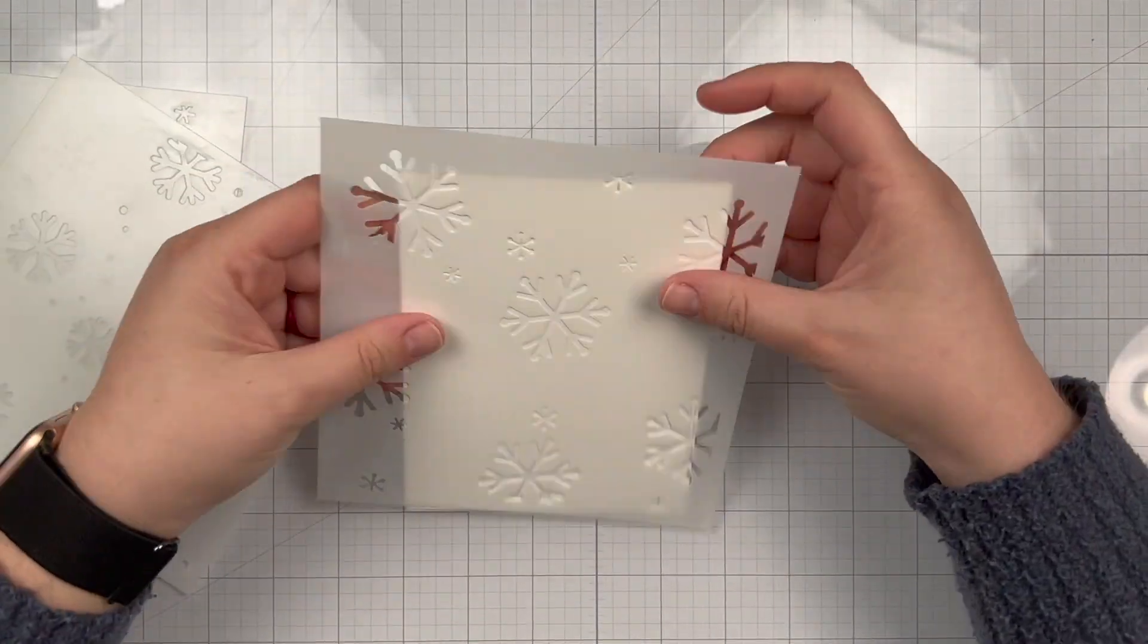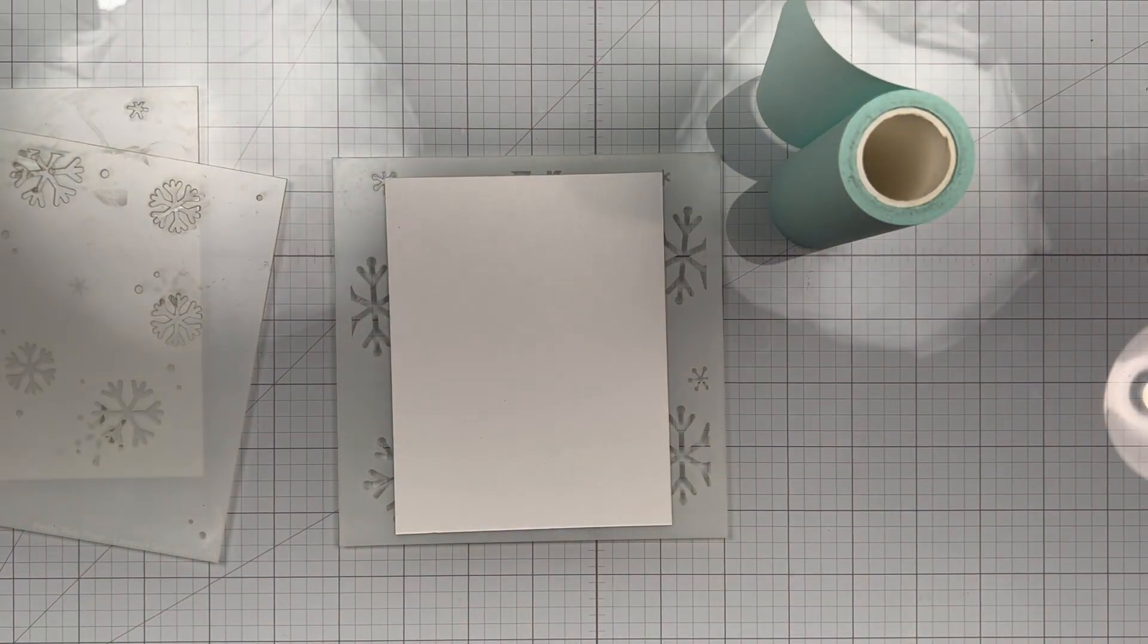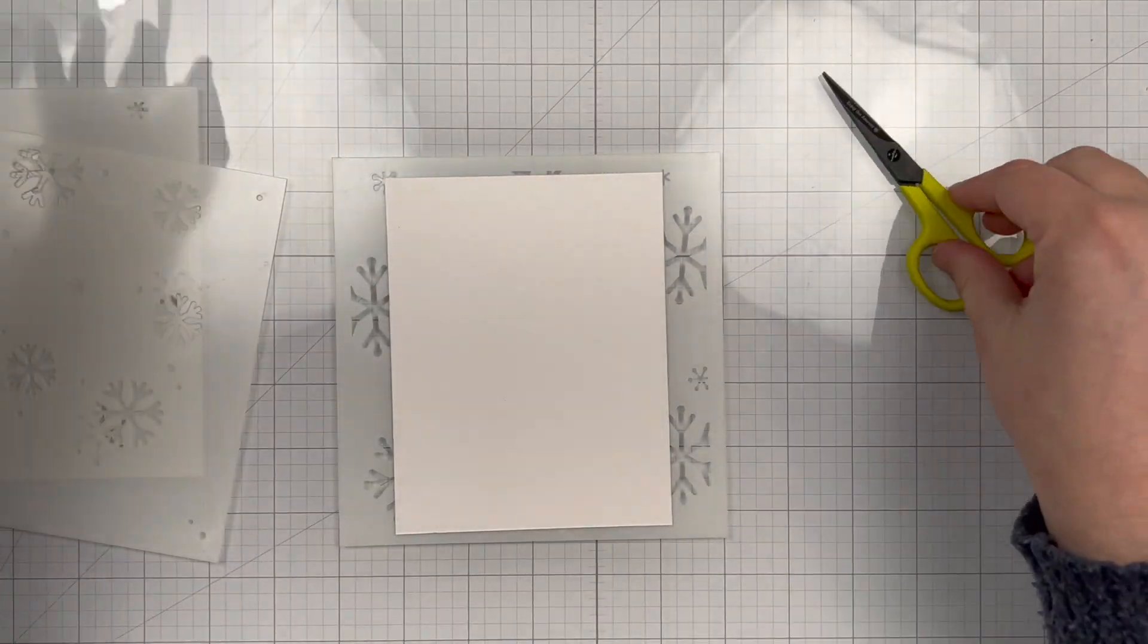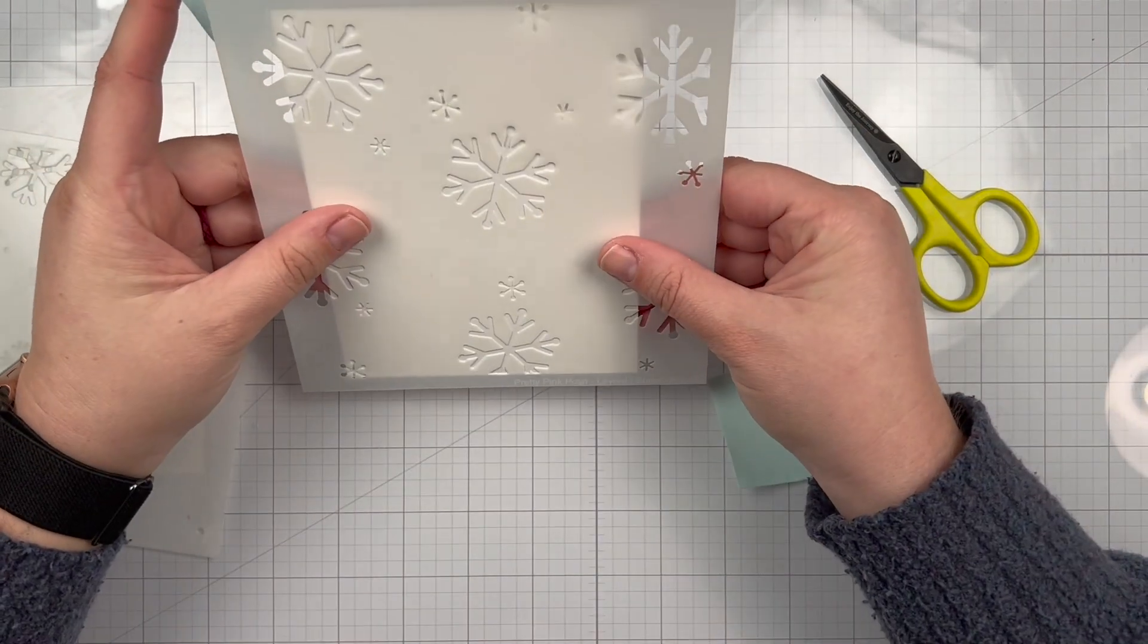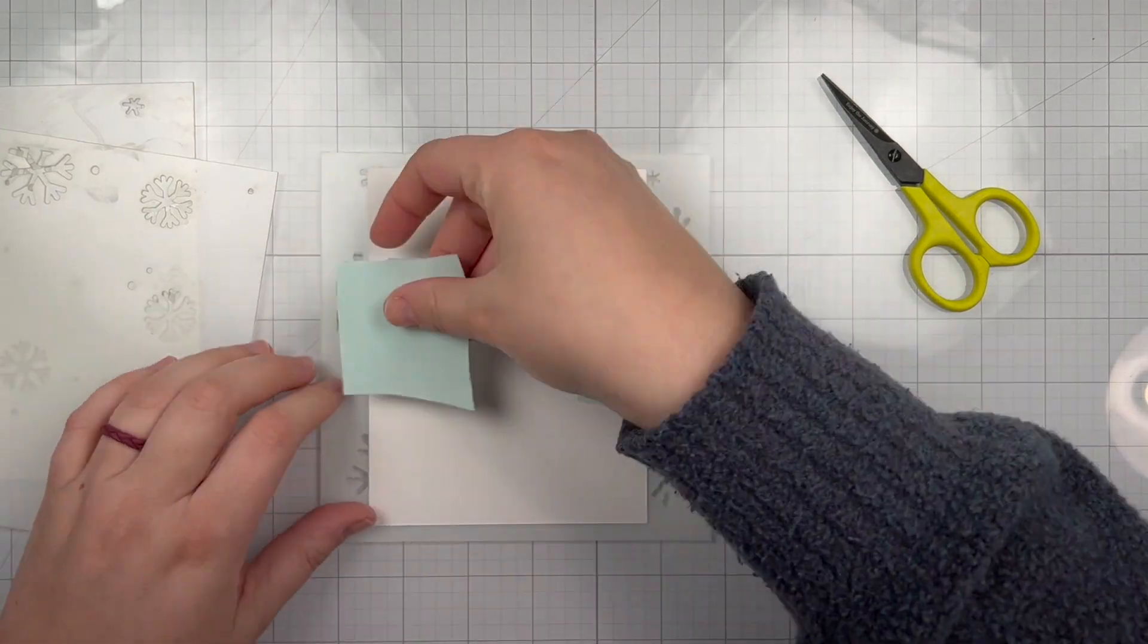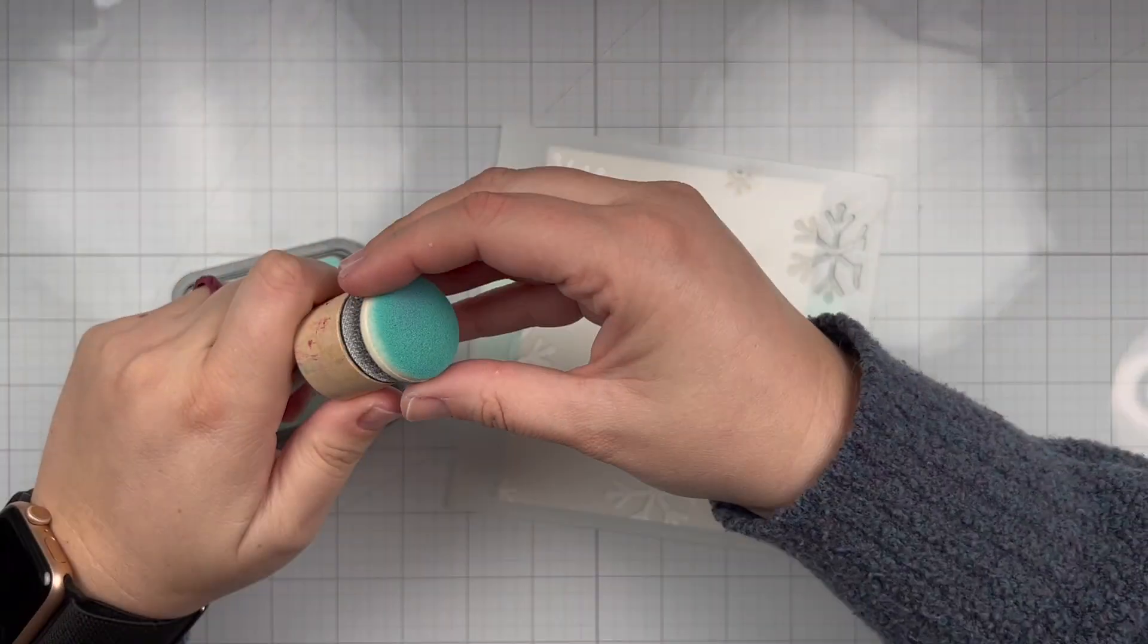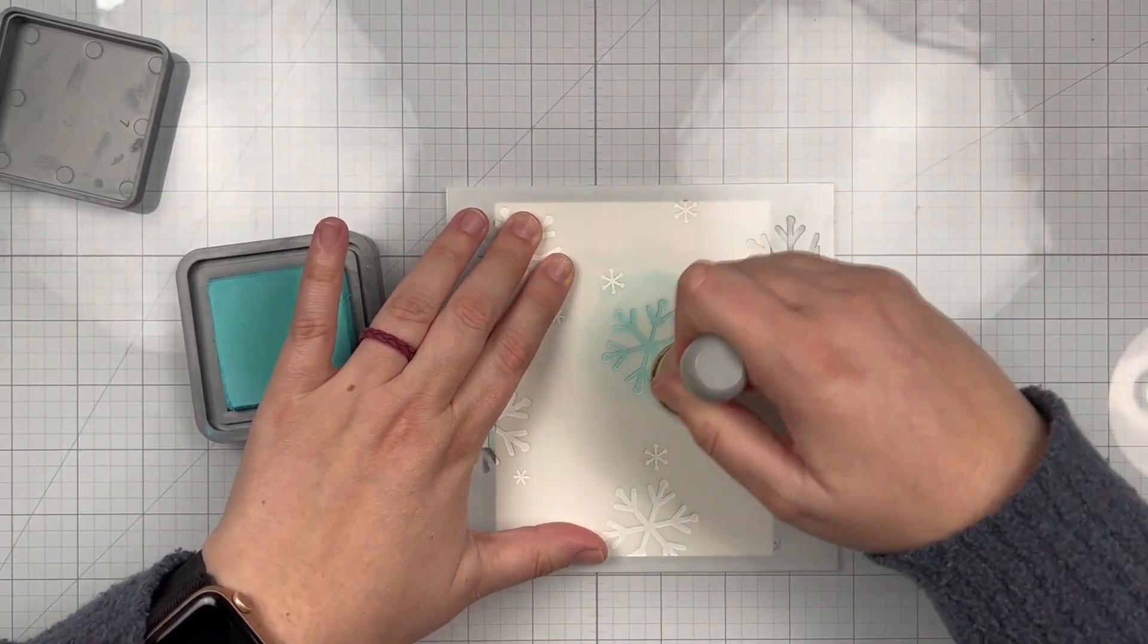We're going to start with the background because it's going to need the longest time to dry. I have some Bristol Smooth cardstock, and I'm going to layer it behind Stencil A, which has the largest snowflakes, and I'm going to use some mint tape to help me keep that in place. And for the larger snowflakes, I'm going to grab my favorite ink - for some reason, I've been just grabbing Salvage Patina so many times for snowflakes.